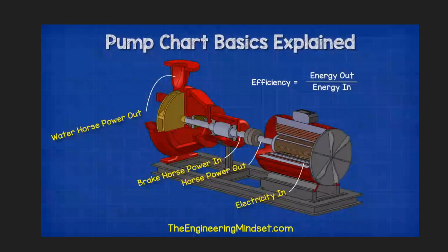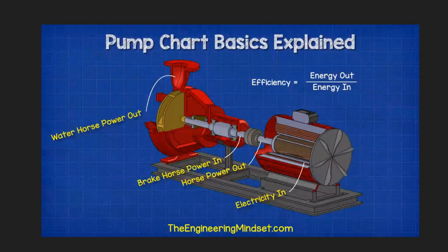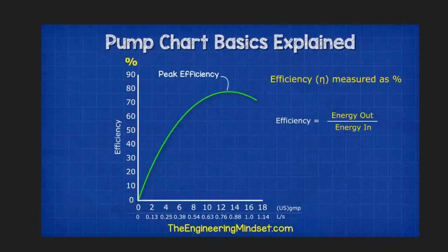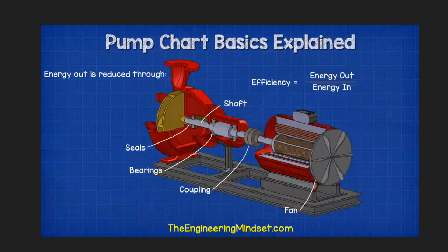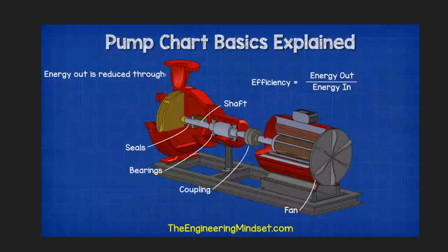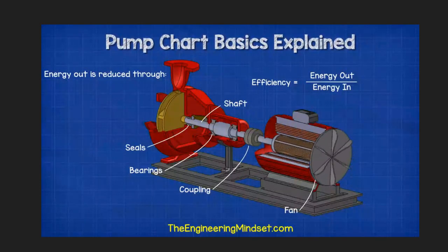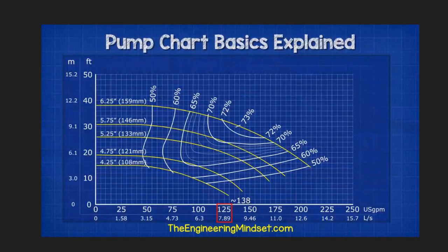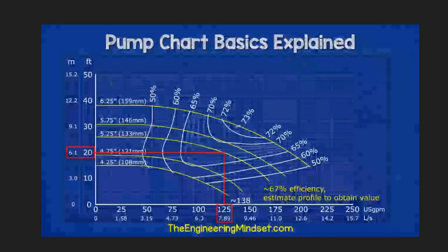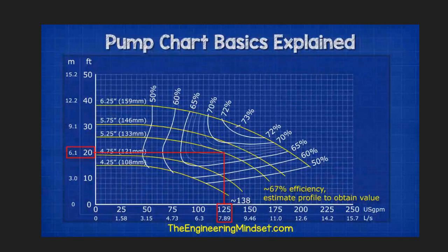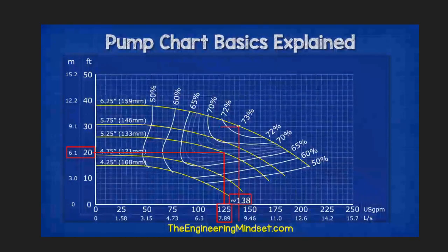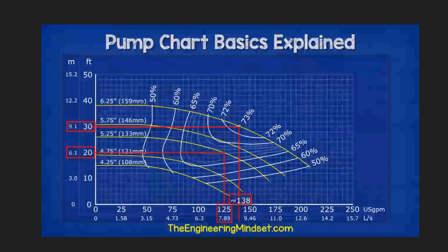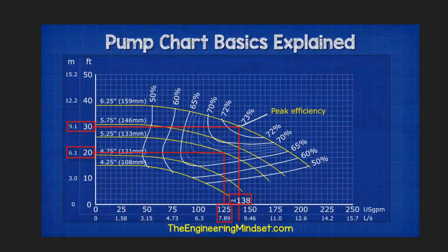Efficiency is the ratio between the amount of energy going into the pump versus the amount of energy we get out. Ideally we want this to be as close as possible to the peak for optimal performance. The pump will always lose some power when converting electrical energy into mechanical energy, lost through the couplings, bearings, shaft, seals, cooling fan, etc. For example, if the pump provided 125 gallons per minute at 25 feet of head, it would run at around 67% efficiency. If the same pump operated at 30 feet of head for 138 gallons per minute, it would operate at its peak performance of 73%.